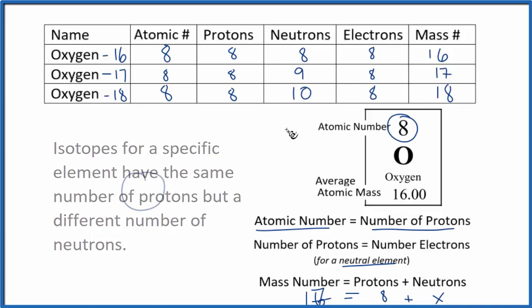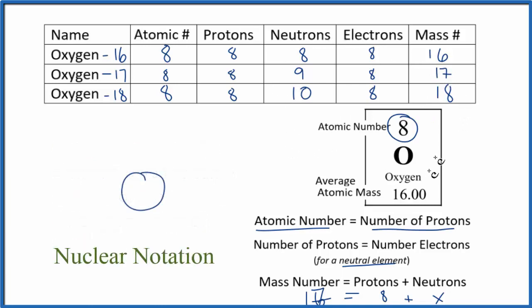One thing we can do is we can write a different notation other than the periodic table for each of the isotopes. So we can take oxygen-16, we would put the 16 here, we'd put the atomic number here, 8. That's oxygen-16.